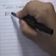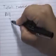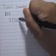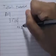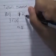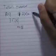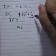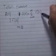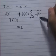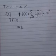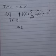Taylor's Theorem states that for any infinitely differentiable function f, f of x is equal to the sum from n equals 0 to infinity of the nth derivative of f evaluated at a, divided by n factorial, multiplied by x minus a to the n.